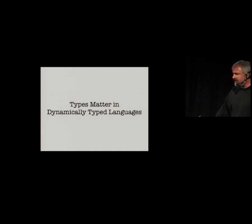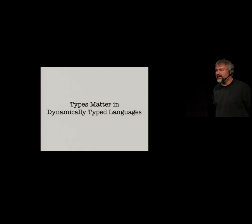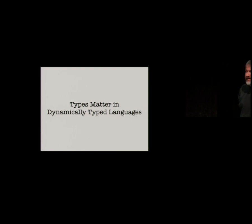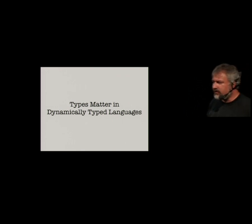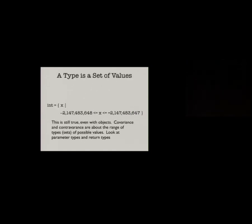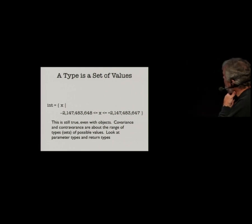Sometimes people think that types don't matter in dynamic programming languages. The thing about dynamically typed languages that people forget quite often is that the types still exist, even though the compiler isn't really checking them for you. This gets back to a computer-science-y way of looking at types. When you start reading textbooks on computer science, one of the things you discover is that a type really is a set of values — for example, a 30-bit integer type is basically all X such that X is within a particular range.